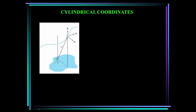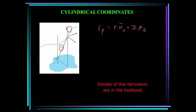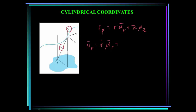Now in cylindrical coordinates, we write the position vector R sub p as r in the u sub r direction plus z in the u sub z direction, introducing the u sub z unit vector. Taking time derivatives and using the chain rule, the velocity equals r-dot in the u sub r direction plus r times theta-dot in the u sub theta direction plus z-dot in the u sub z direction. The acceleration can be written as (r-double-dot minus r times theta-dot squared) in the u sub r direction, with similar extensions for the other components.